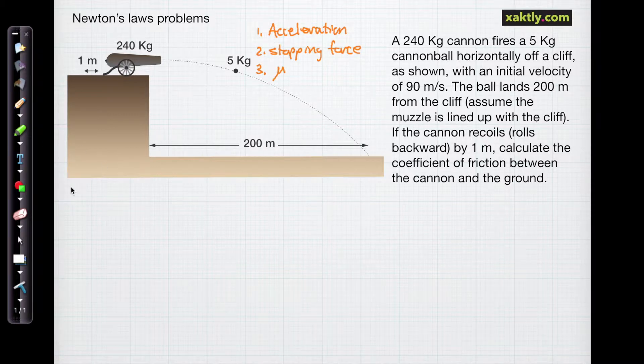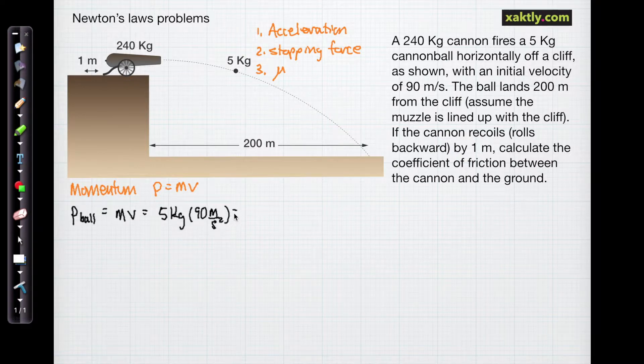So the first thing we'll do is use a little momentum analysis. Momentum is mass times velocity. So the momentum of the cannonball is its mass, which is 5 kilograms, times its velocity, which is going to be 90 meters per second. That's given. And so our momentum of the cannonball is 450 kilogram meters per second.